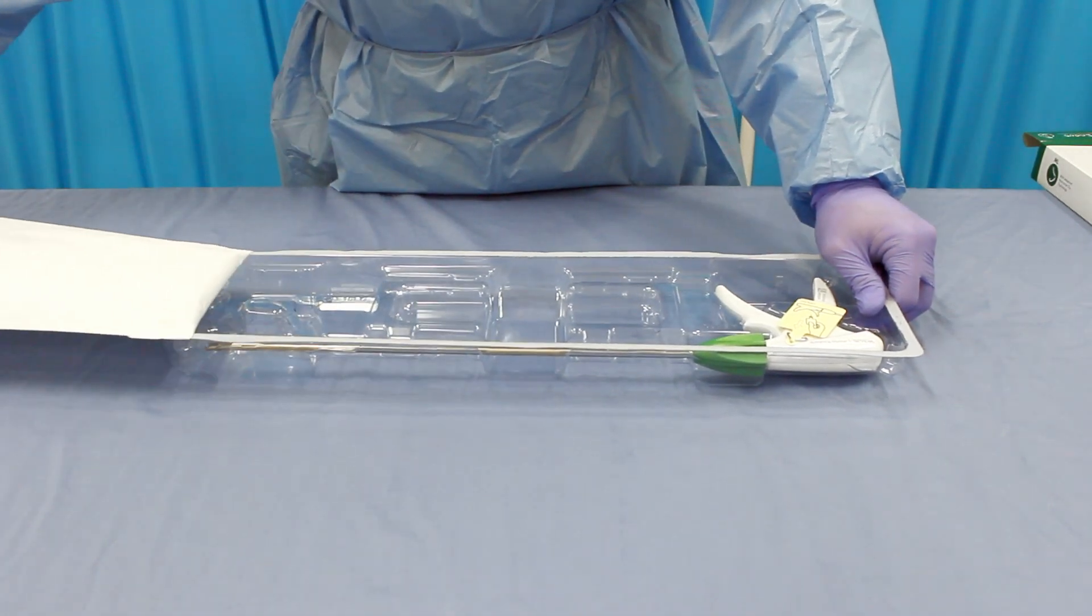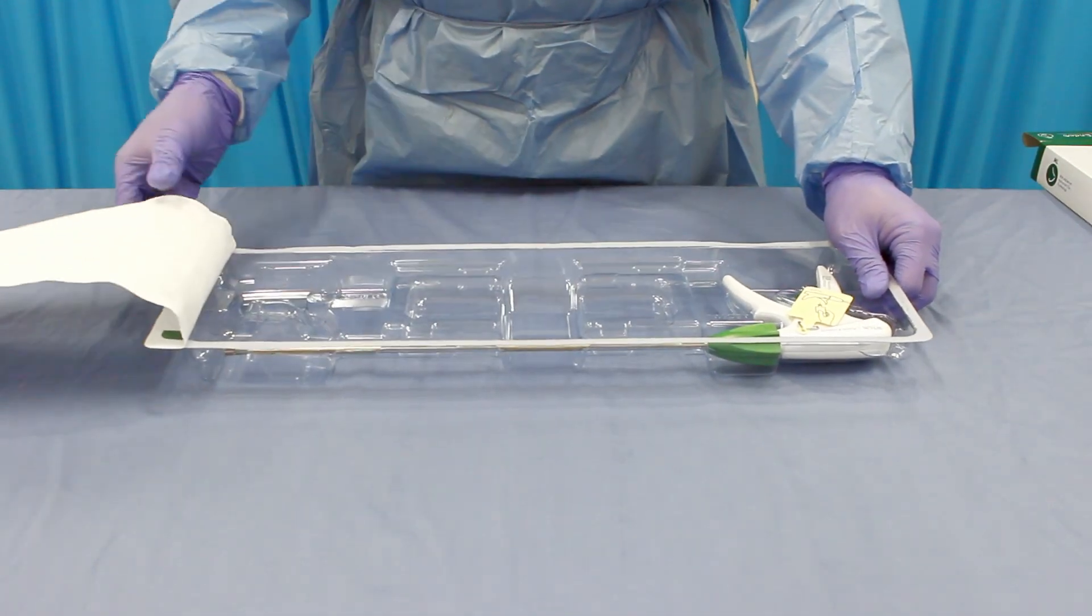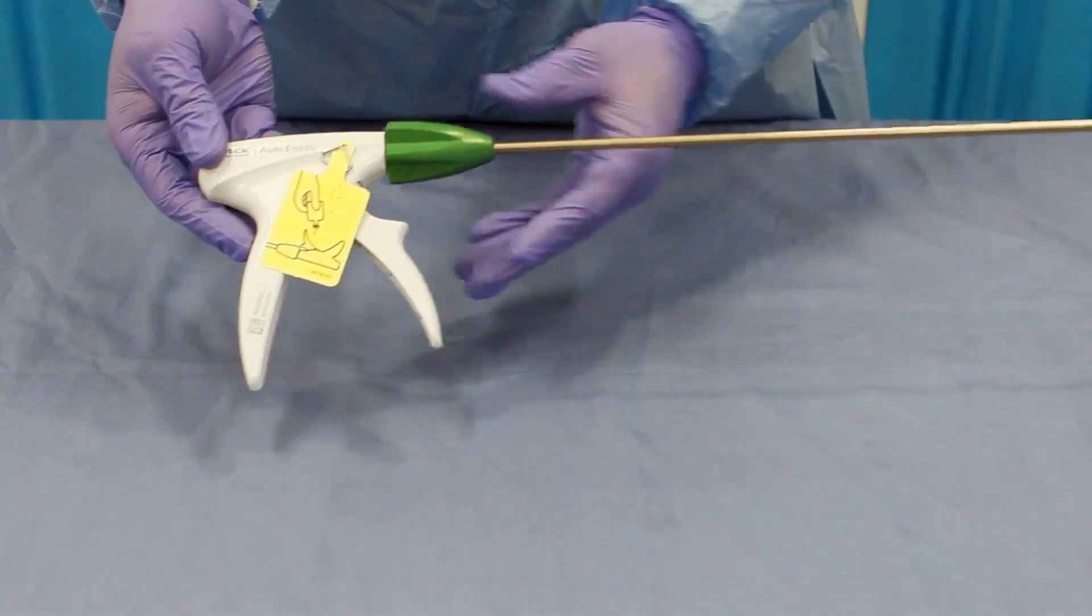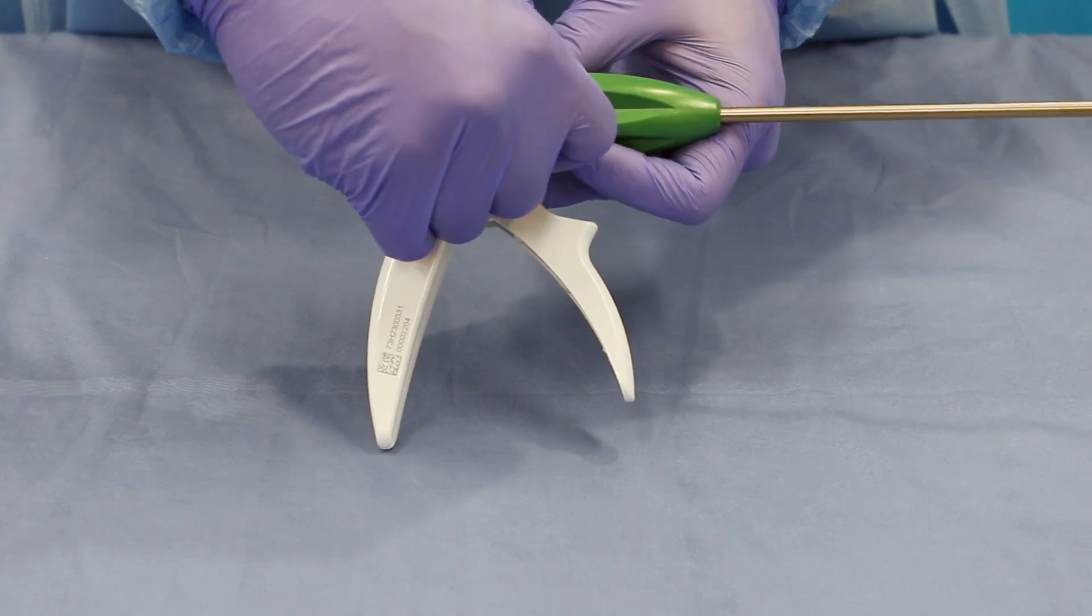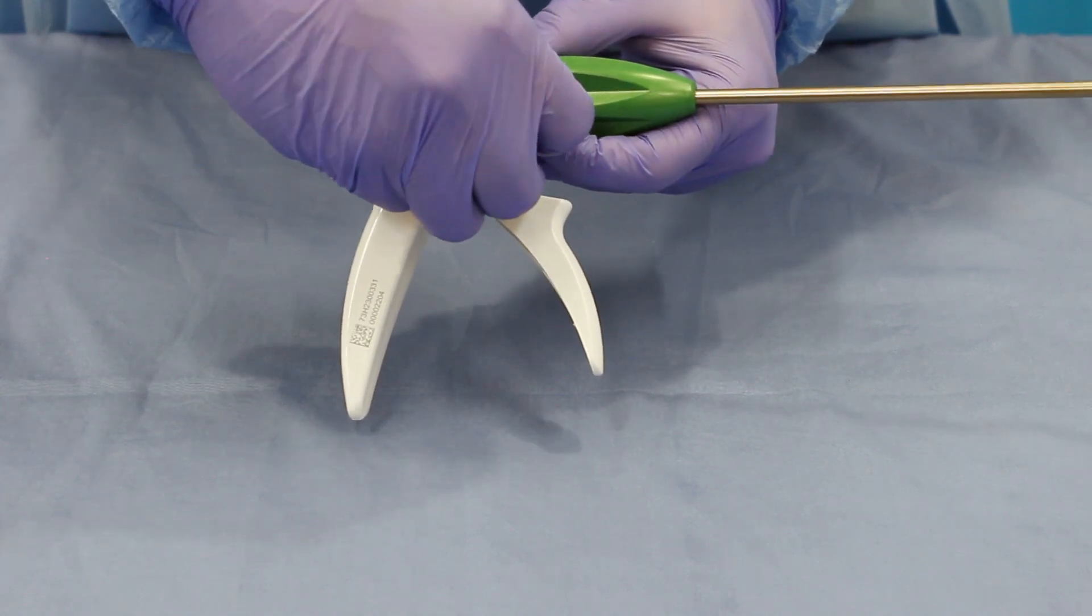To use the Weck Auto Endo 5 Automatic Hemolock Clip Applier, follow these steps. Step 1: Prior to use, remove and discard lock pin card attached to the applier. To remove the card, pull up on the card.